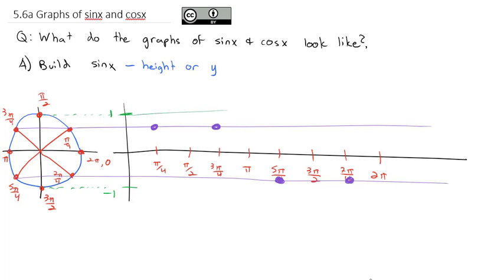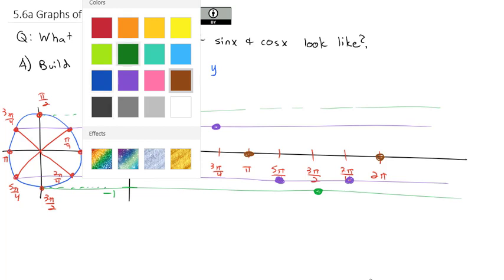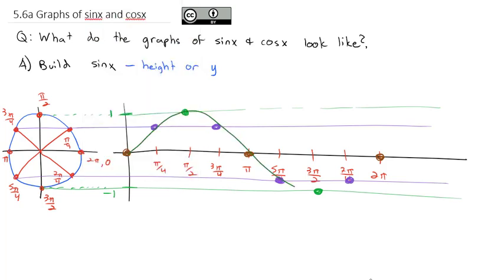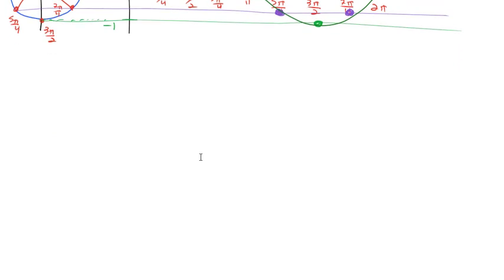Pi over 2 is at the top, and 3 pi over 2 is at the bottom. The other observation is that 0, pi, and 2 pi have a height of 0, so they're right on the x-axis. With all these dots we can connect them, and we see a nice smooth up, down, back up shape — and that's where we get the idea of the graph of sine of x.